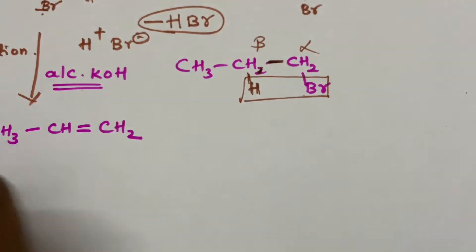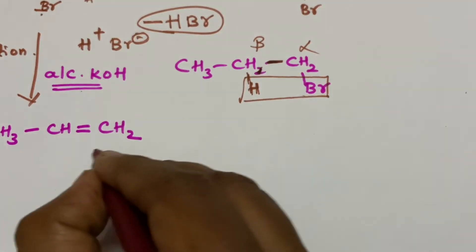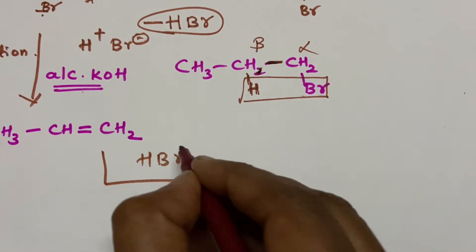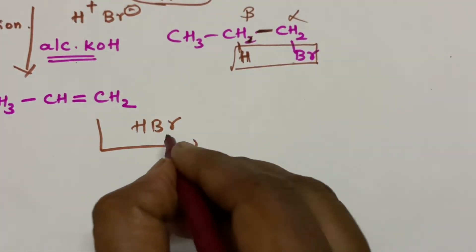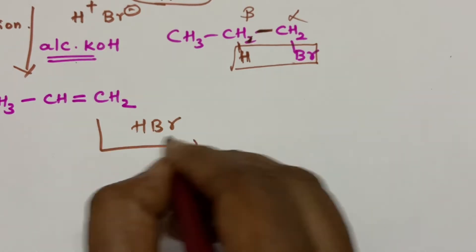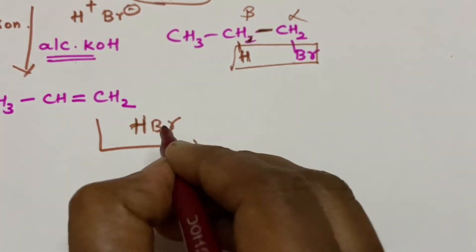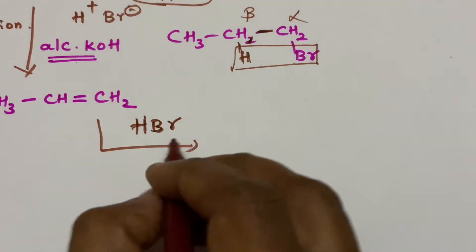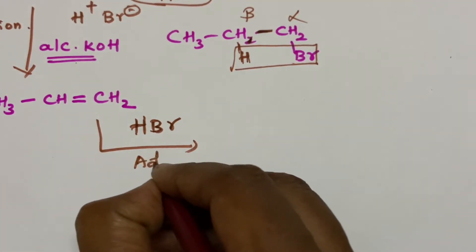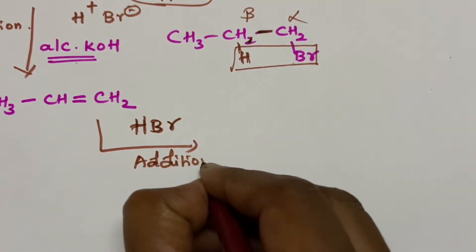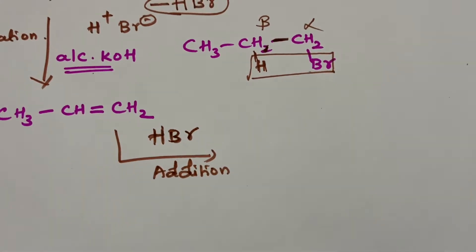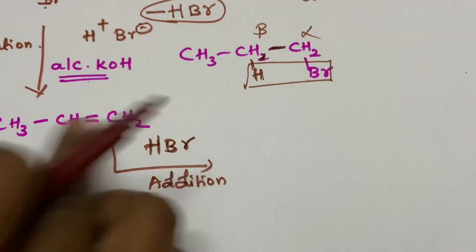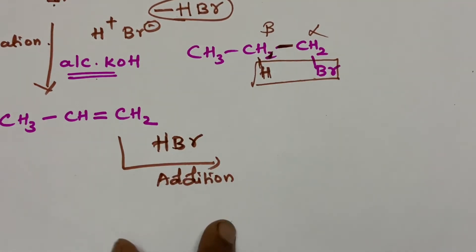Now what you have to do is again add HBr. HBr itself is an acid so we don't need any other catalyst here. The reaction is an addition reaction, and during an addition reaction we have to follow Markovnikov's rule.